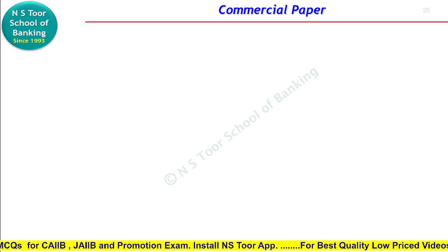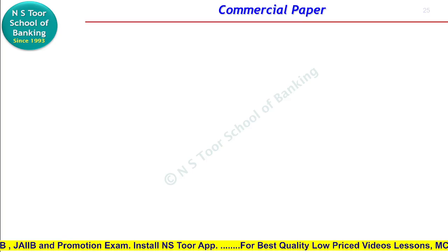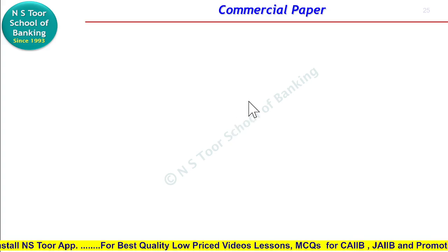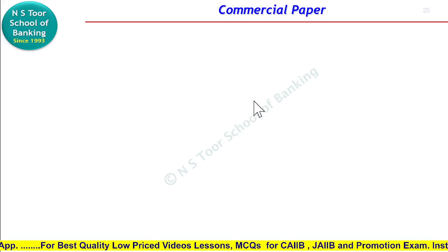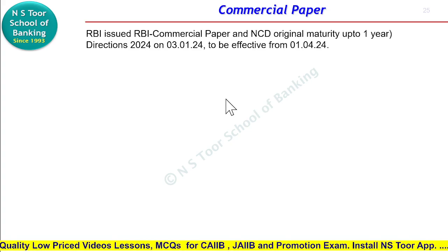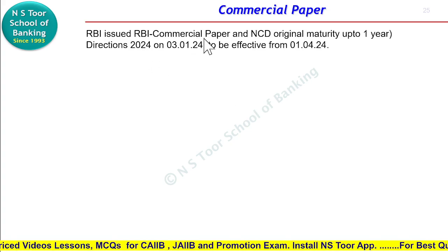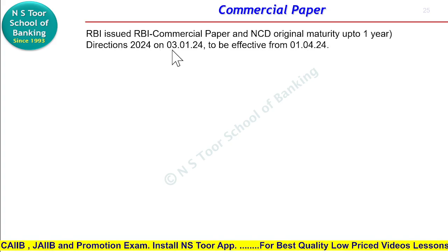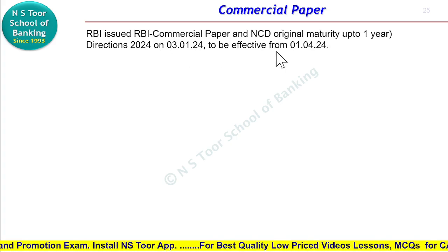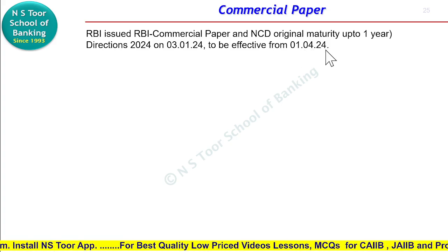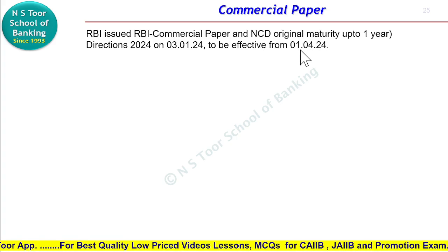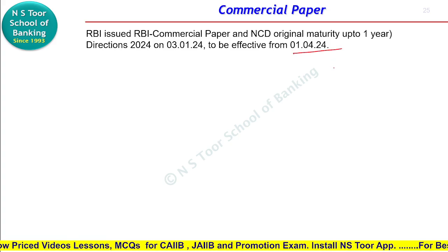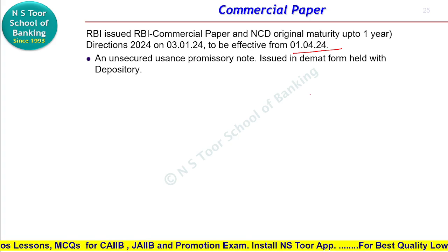Hello Friends, Namaskar. This lesson we will learn about commercial paper — what it is, what its maturity, amount, and conditions are. We will discuss all these matters. Reserve Bank of India issued the RBI Commercial Paper and NCD Original Maturity up to 1 Year Directions 2024 on 3rd January 2024, which are going to be effective from 1st April 2024. We will cover all the changes made in these directions in this session.